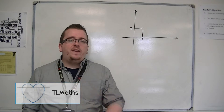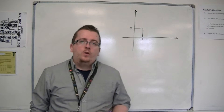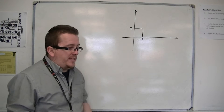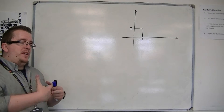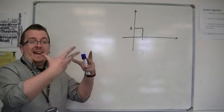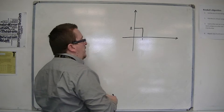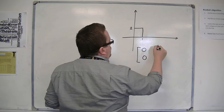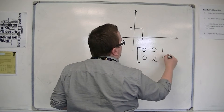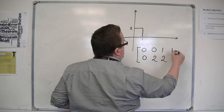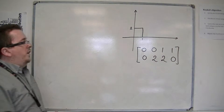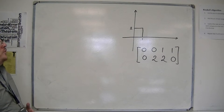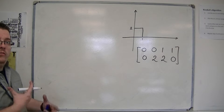In a couple of videos ago, we were looking at this rectangle. I introduced the rectangle as potentially being able to define it using a matrix as its set of coordinates. So I could say that this is (0,0), (0,2), (1,2), and (1,0). And what I want to do is apply some matrices to this to show you what those matrices are going to do.